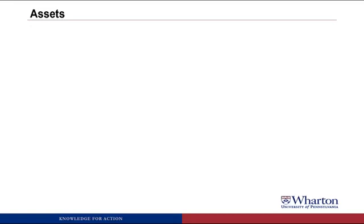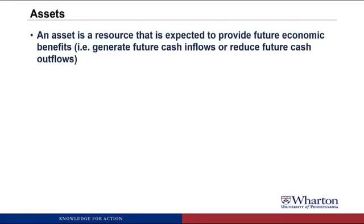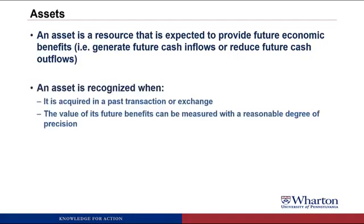Let's start with assets. An asset is a resource that's expected to provide future economic benefits — meaning it's either going to generate future cash inflows or it's going to reduce future cash outflows. There are two criteria that we use to decide when to recognize an asset. First, it must be acquired in a past transaction or exchange, and second, the value of its future benefits can be measured with a reasonable degree of precision.